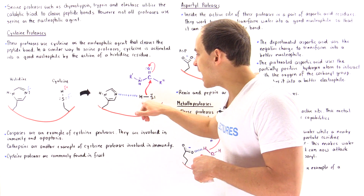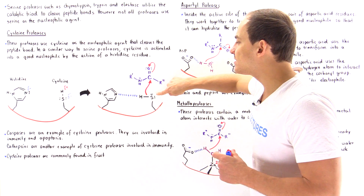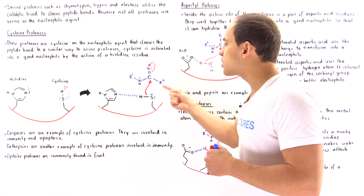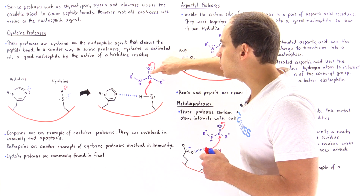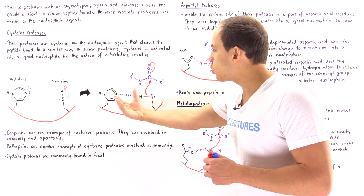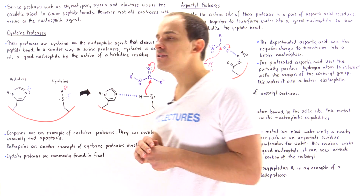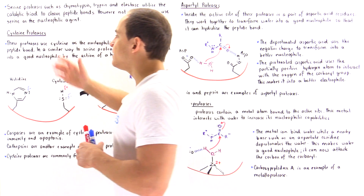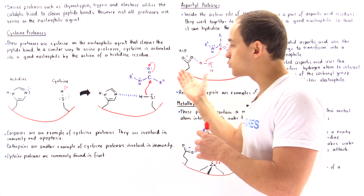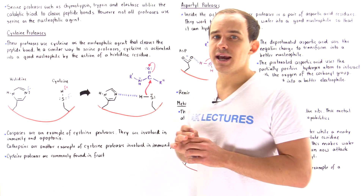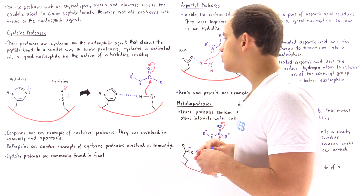As the H atom is pulled onto the nitrogen of the nearby histidine residue, the electron density on the sulfur increases. With the incoming substrate molecule, these two electrons nucleophilically attack the carbon on the carbonyl, displacing the pi bond. This forms the same type of tetrahedral intermediate as in the serine protease reaction mechanism. Just like in serine proteases, an oxyanion hole can stabilize the negative charge on that oxygen in the tetrahedral intermediate.